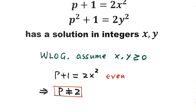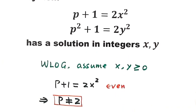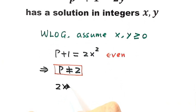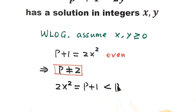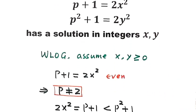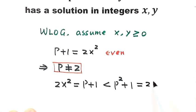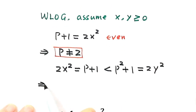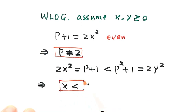From the first equation, 2x squared equals p plus 1. Because p is a prime greater than 2, we have p less than p squared, which is less than p squared plus 1. And from the second equation, p squared plus 1 equals 2y squared. So 2x squared is less than 2y squared, which implies x is less than y. This is Result 1.